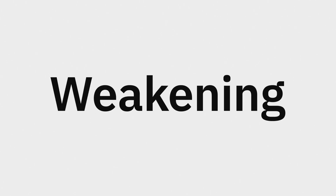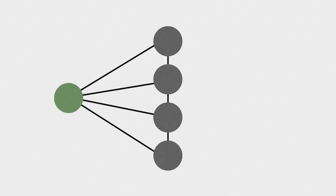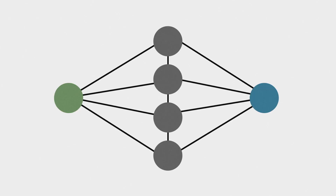We might not know exactly what happens in the network, but the network can keep making, strengthening or weakening connections until it produces the right response. A large language model learns like a neural network. Think about a simple network — there is an input, a layer of neurons and an output.